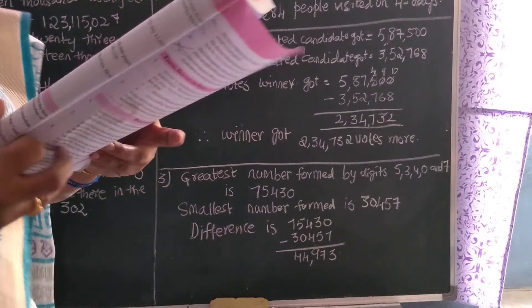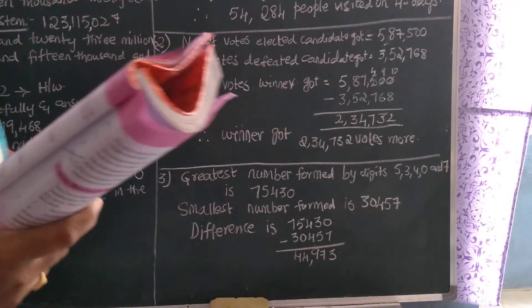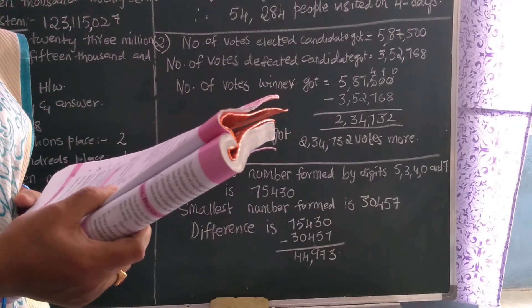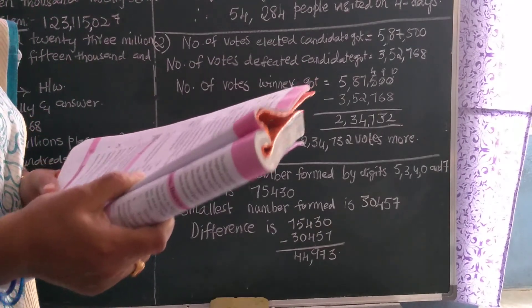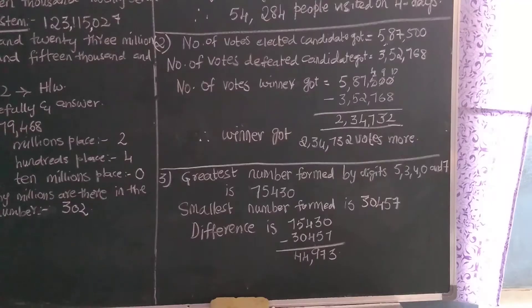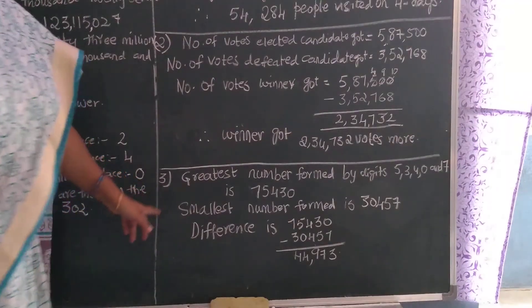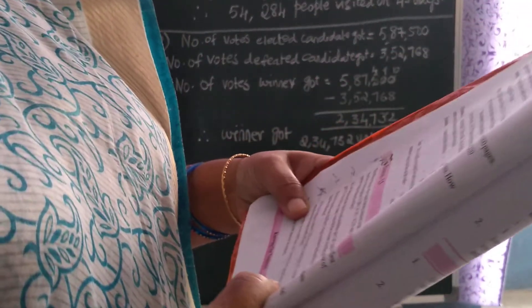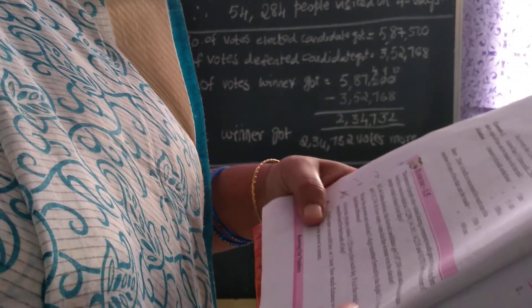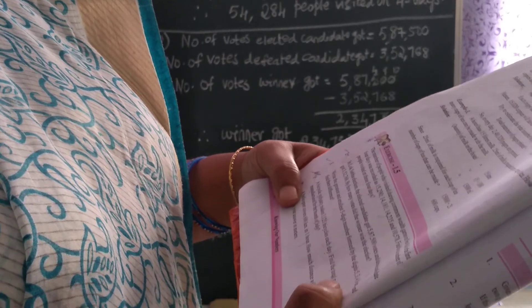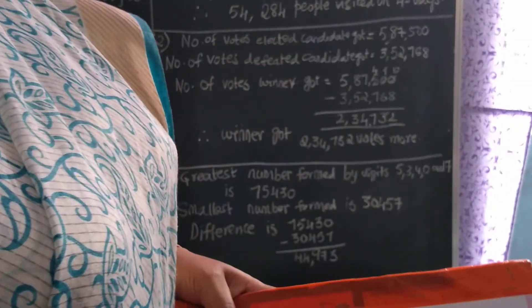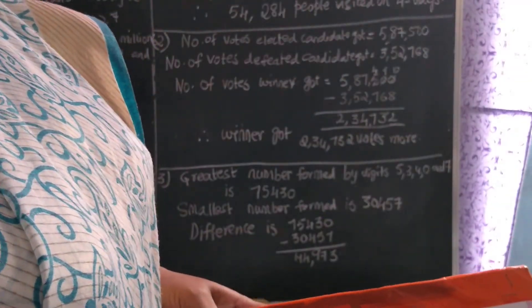Third question: write the greatest and the smallest five-digit number formed by the digits 5, 3, 4, 0, and 7, and find their difference. Difference means subtraction.